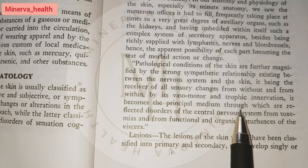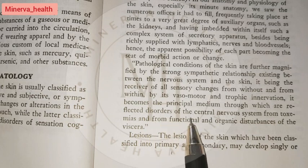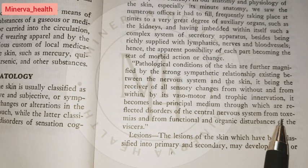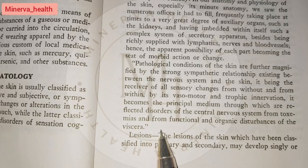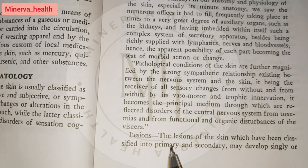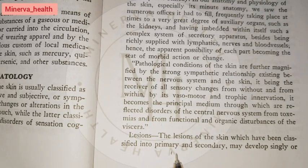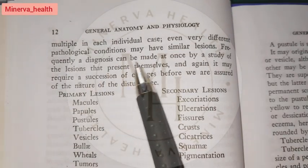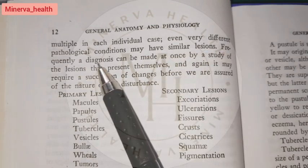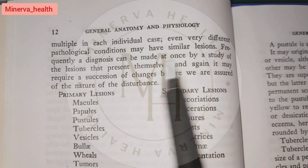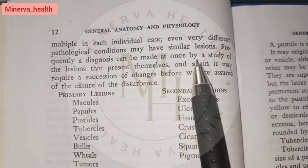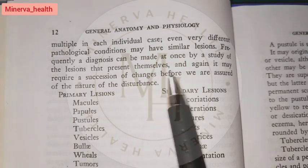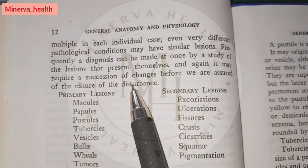The skin becomes the principal medium through which are reflected disorders of the central nervous system from toxic miasms and from functional and organic disturbances of the viscera. The lesions of the skin, classified into primary and secondary, may develop singly or in multiples. Even very different pathological conditions may have similar lesions. Frequently a diagnosis can be made at once by studying the lesions, though it may require a succession of changes before the nature of the disturbance is assured.